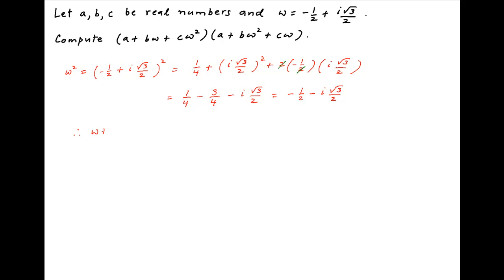Therefore, omega plus omega square is equal to minus half plus i times root 3 upon 2, plus minus half minus i times root 3 upon 2. The imaginary terms cancel and the value of this expression is equal to minus 1.